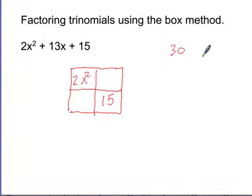Divide it into four sections, four quadrants. And you're going to take your first term, which is 2x squared, and you're going to put your last term, which is 15, down here. Now, we're going to take 2 times 15, which is 30. So that's the number we're going to work with, 30. And I want to know the factors of 30. What numbers multiply to 30?